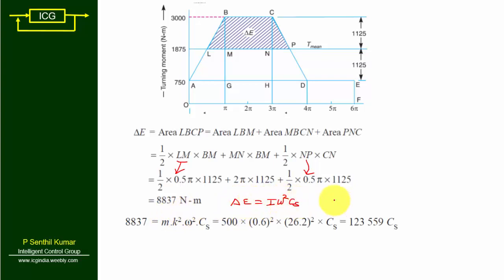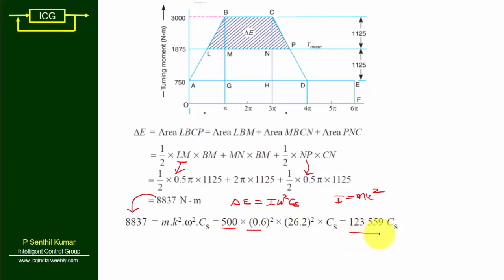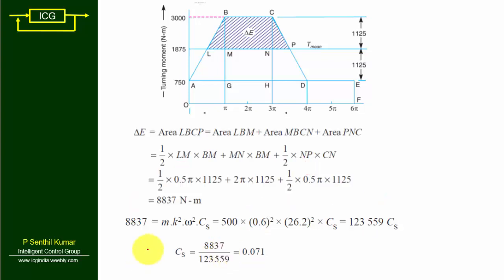Substituting values: 8837 = MK² × ω² × CS = 500 × (0.6)² × (26.2)² × CS = 123,559 × CS. Solving for CS gives CS = 8837 / 123,559 ≈ 0.07. Therefore, the coefficient of fluctuation of speed CS = 0.07, which is the answer for subdivision two.